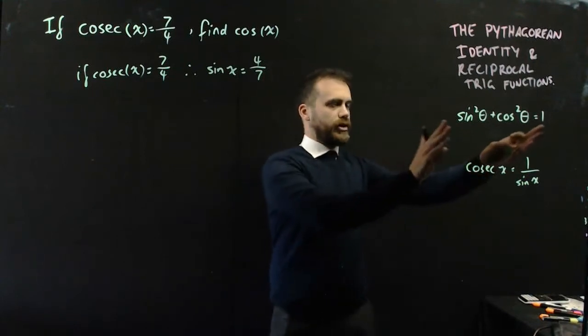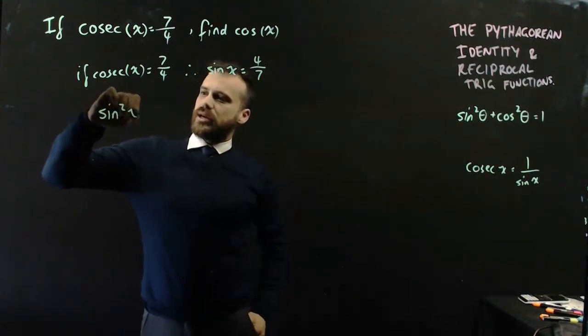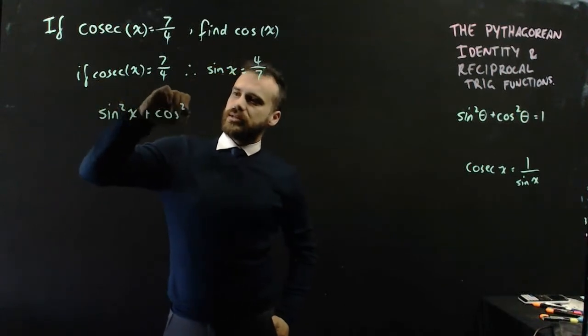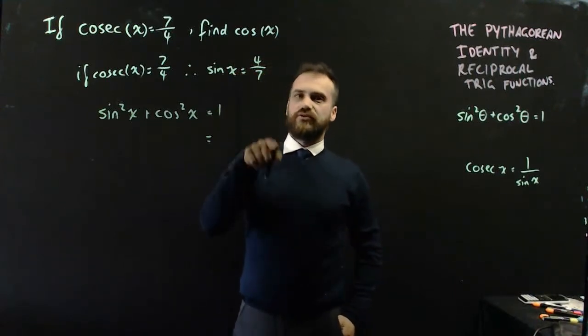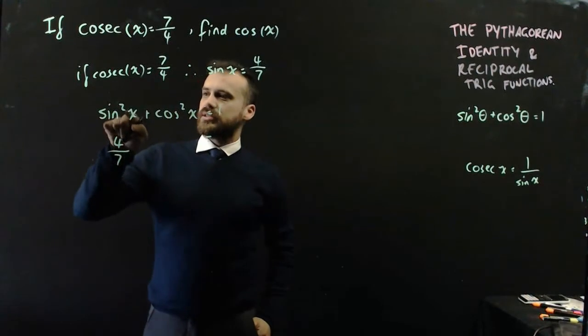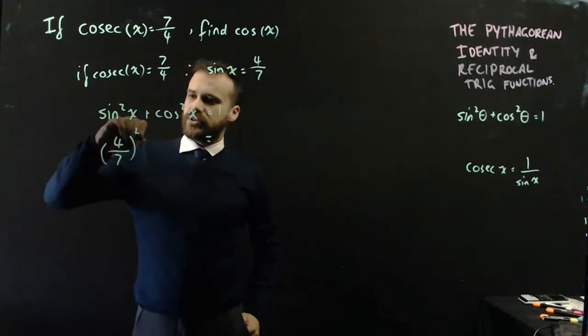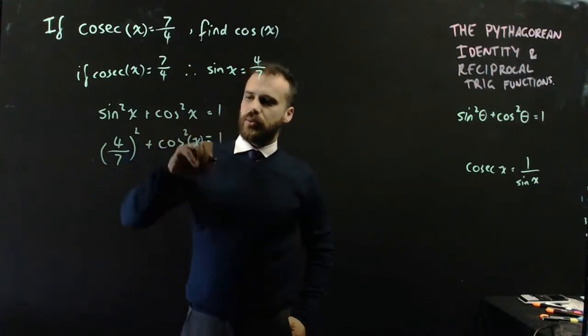Well, I can use my friend the Pythagorean identity, and I can say that sine squared x plus cos squared x equals 1. And I know that sine x equals 4 on 7. So sine x squared is 4 on 7 squared plus cos squared x equals 1.